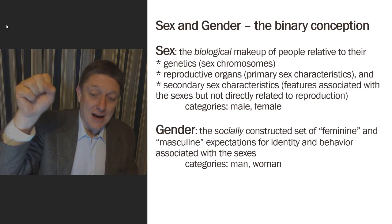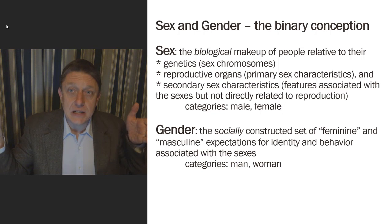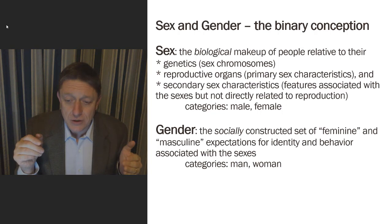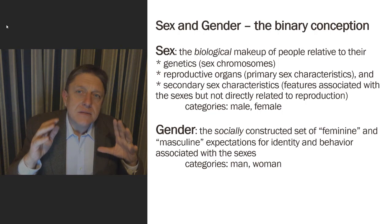These secondary features, these primary features, and then genetics are typically collapsed into two categories in the classical interpretation: that there are males and females in the world.